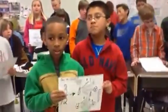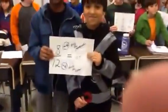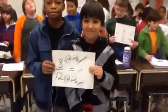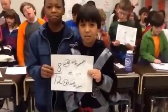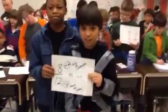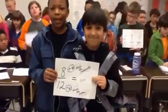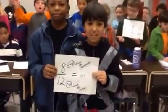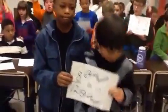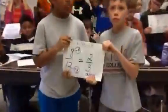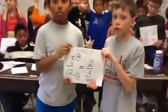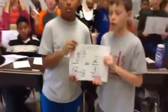Find the greatest common factor, divide the numerator, then divide the bottom. Now you've reduced your fractions.